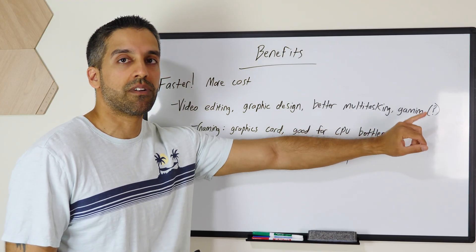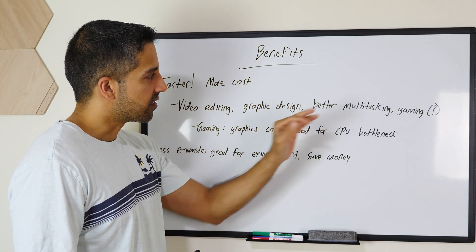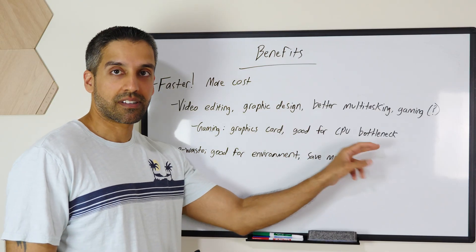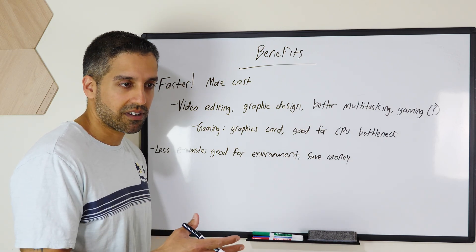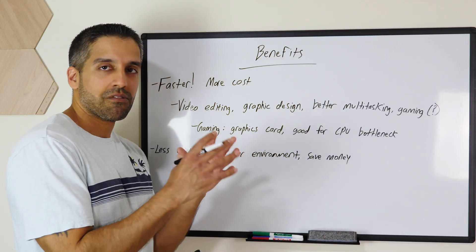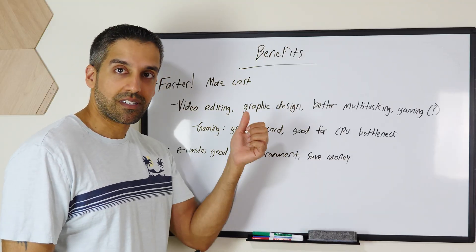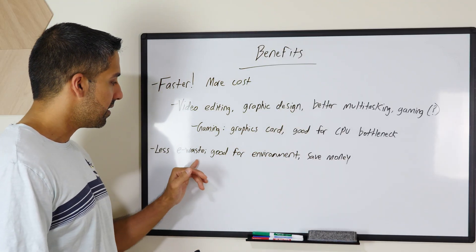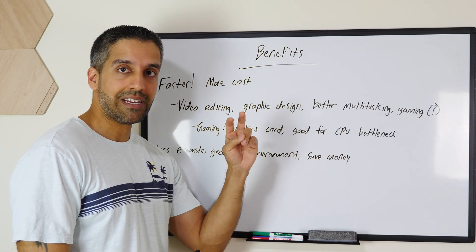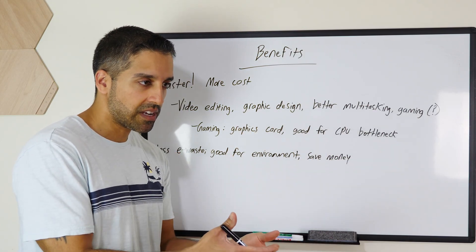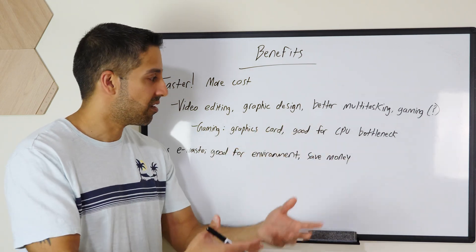Gaming is situational because it relies heavily on the graphics card — I'll definitely make a series on graphics cards in the future. But overclocking is good for CPU bottlenecks: if you have an older processor, it's much easier to upgrade your graphics card than your CPU, because changing your CPU may require changing your motherboard too. So if games are running slow because the CPU is the bottleneck and your graphics card is fine, overclock the CPU. Another thing a lot of people don't talk about is less e-waste — think about saving money. If your aging computer needs more performance, just overclock it, experiment, tinker with it, and you might get it to run faster and longer instead of buying a new computer.